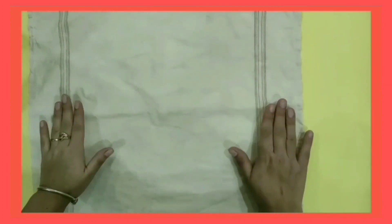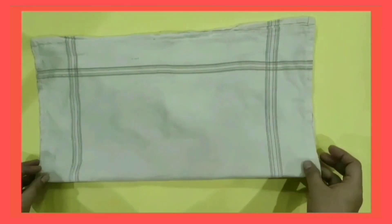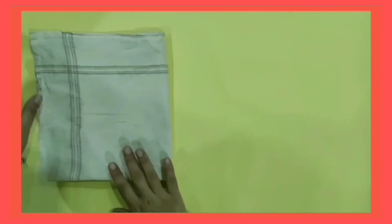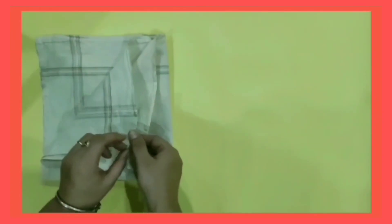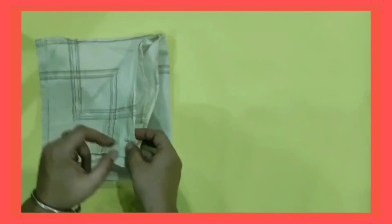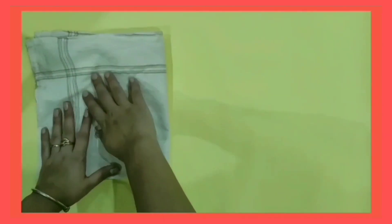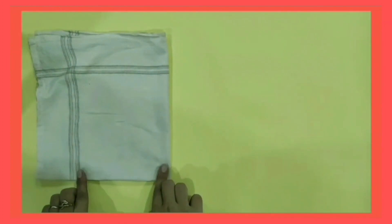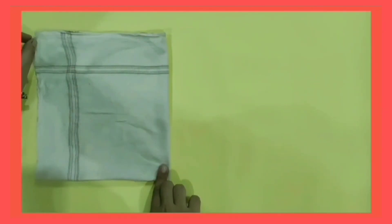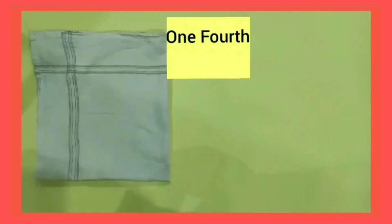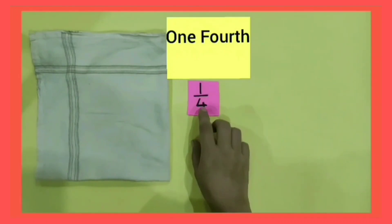Now we discuss it in another way. I have one hanky and when I fold this hanky four times, how many parts are there? One, two, three, four. There are four equal parts of the hanky, and when we divide one whole thing into four equal parts, one of its parts is called one-fourth. In numbers, we write it as 1/4.